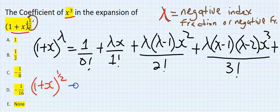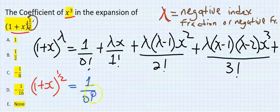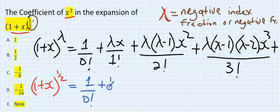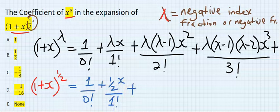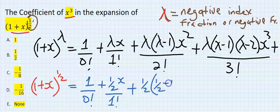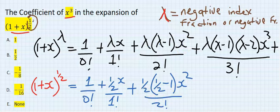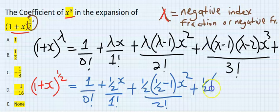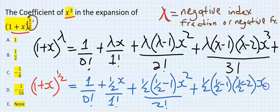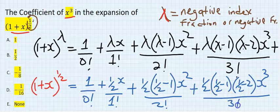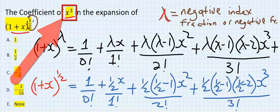So I'm going to use this formula that says 1 over 0 factorial plus here my lambda is half x over 1 factorial plus here I'm going to have half in bracket. Here is half minus 1 then I have x squared over 2 factorial plus here is half the next one will be half minus 1 in bracket. I will have half minus 2 in bracket x to the power of 3 over 3 factorial.